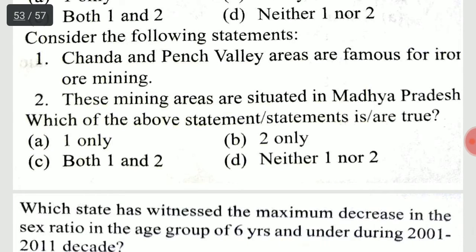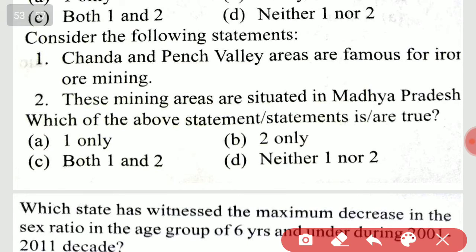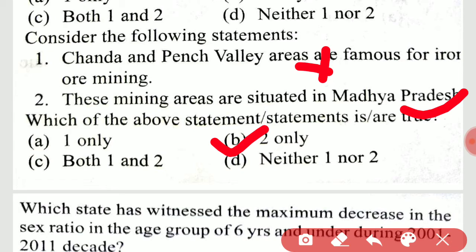Consider the following statements: Chanda and Pench Valley areas are famous for iron ore mining; these mining areas are situated in Madhya Pradesh. Which is correct? The correct response is statement 2 — these mining areas are situated in Madhya Pradesh. Chanda and Pench Valley.